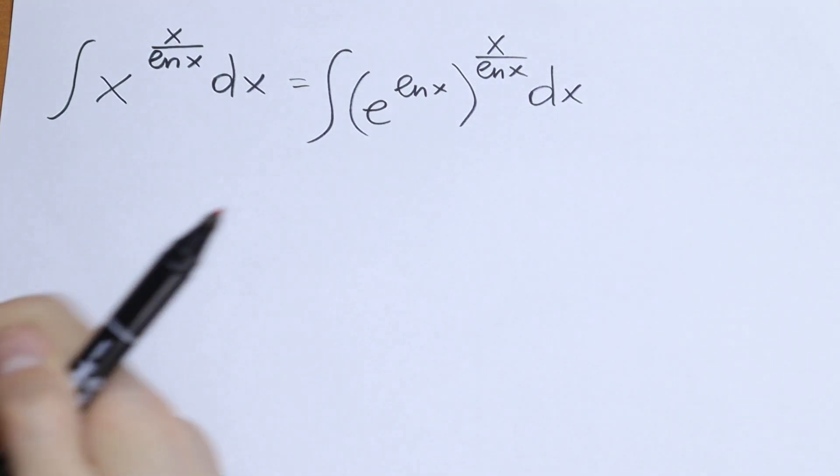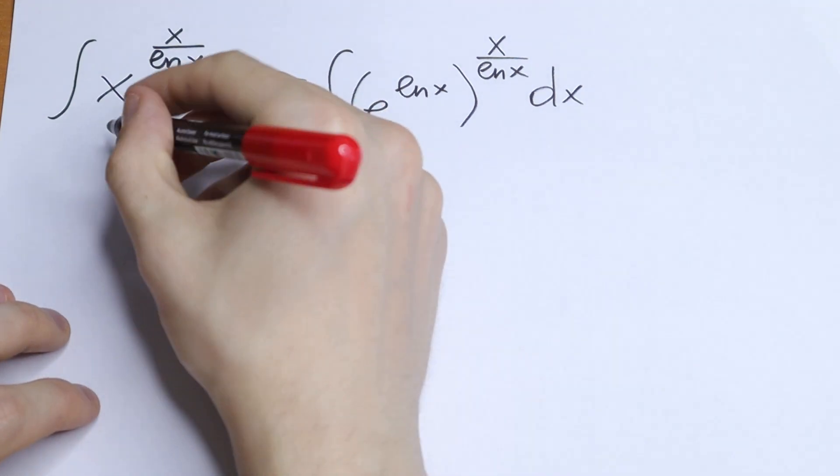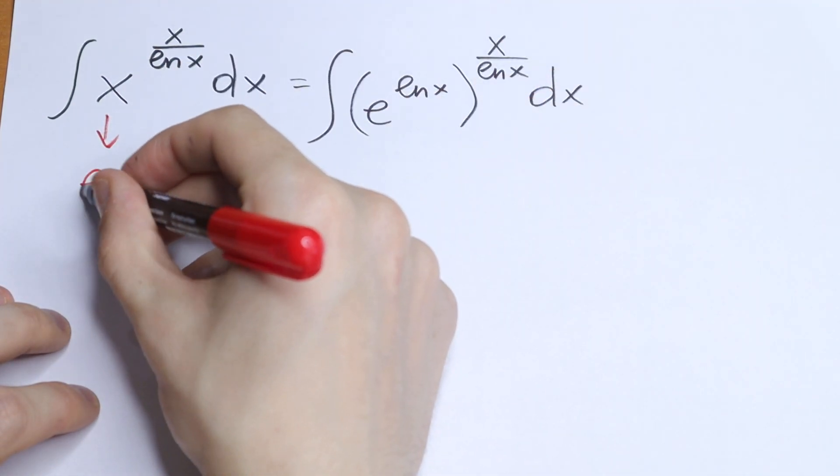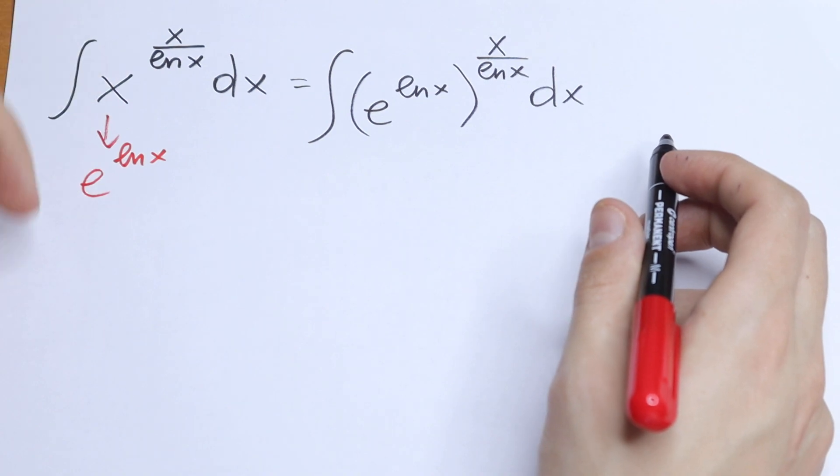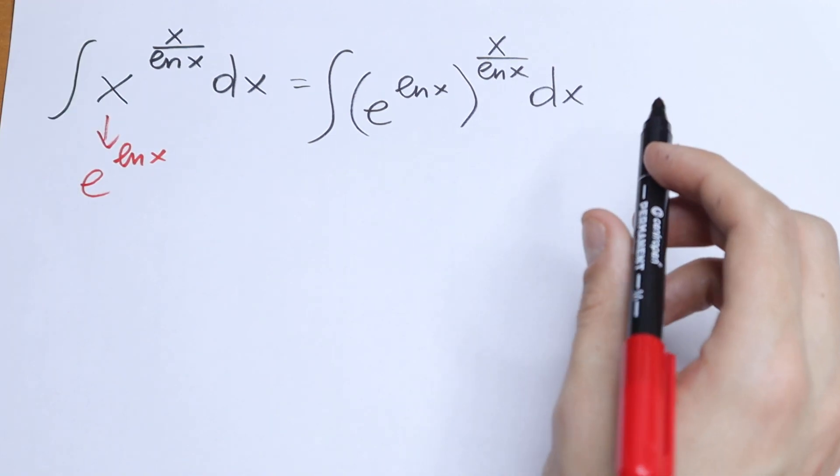So I write this x as e to the power natural log x. We can do this because this will be of course the same. I change x to e to the power natural log x.